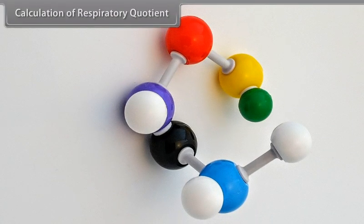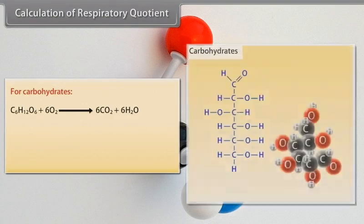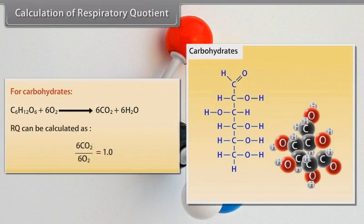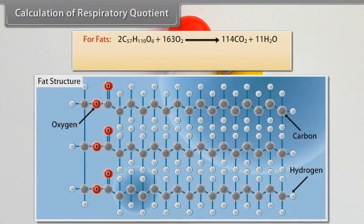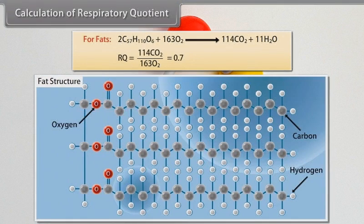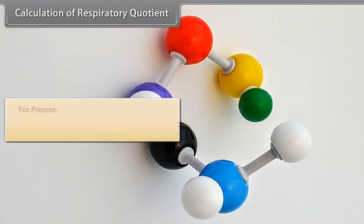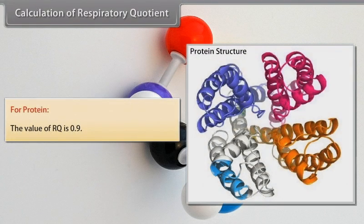For carbohydrates: C₆H₁₂O₆ + 6O₂ → 6CO₂ + 6H₂O. Respiratory quotient = 6CO₂ / 6O₂ = 1. For fats: 2C₅₇H₁₁₀O₆ + 163O₂ → 114CO₂ + 110H₂O. Respiratory quotient = 114CO₂ / 163O₂ = 0.7. For protein, the value of respiratory quotient is approximately 0.9.